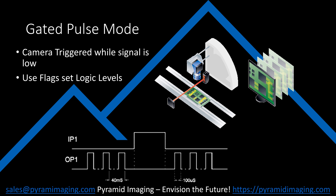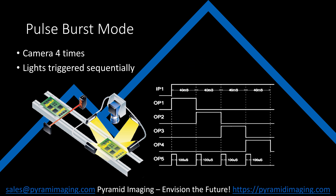You can define whether the input should be considered active high or active low. Here, we have four different lights and one camera. The camera needs to take pictures for every light, but only one light is on at a time. You can trigger the light similar to before, but then the camera needs to be triggered four times after the input becomes true.